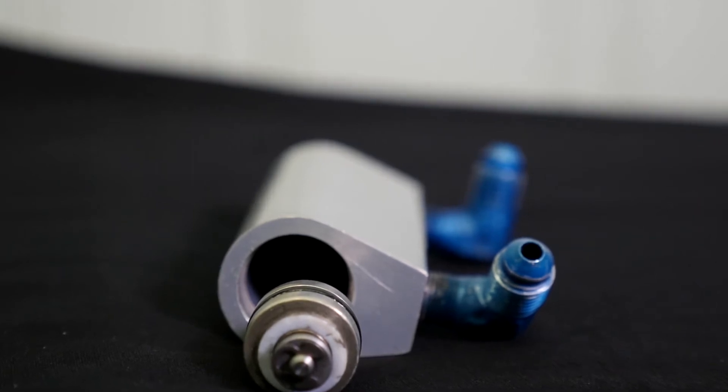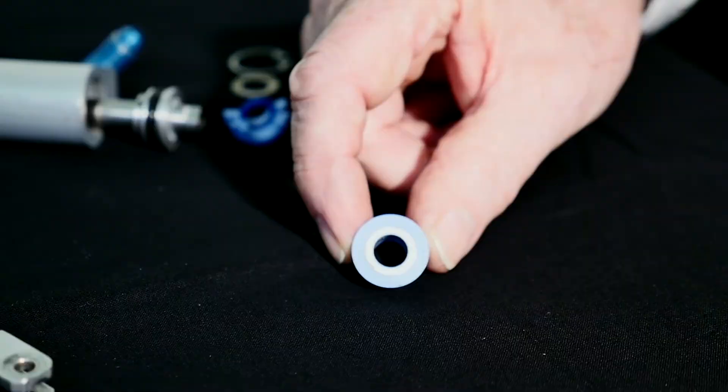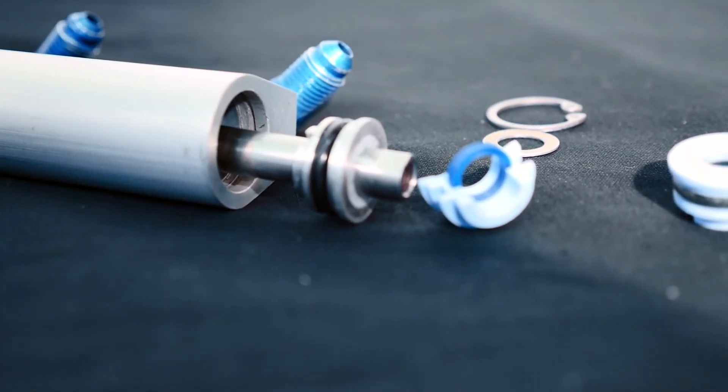Leakage at the gland can be caused by a damaged piston rod o-ring or wear on the aluminum gland, or a combination of both.